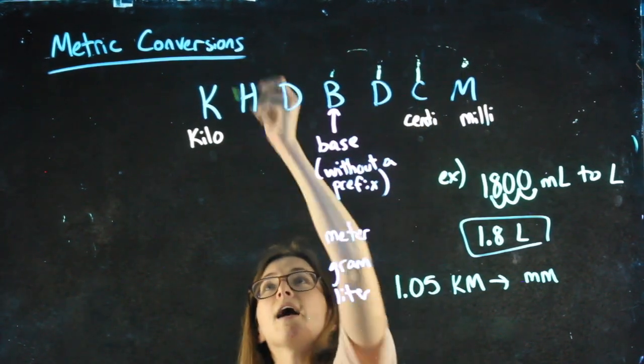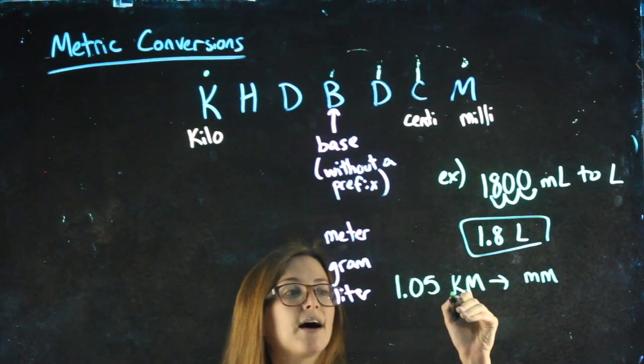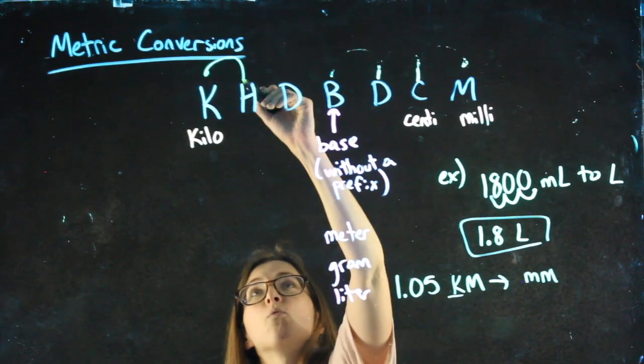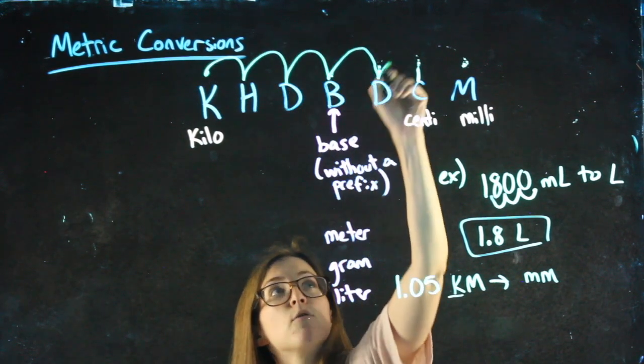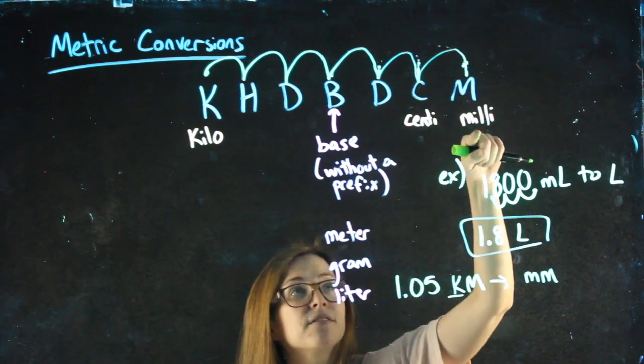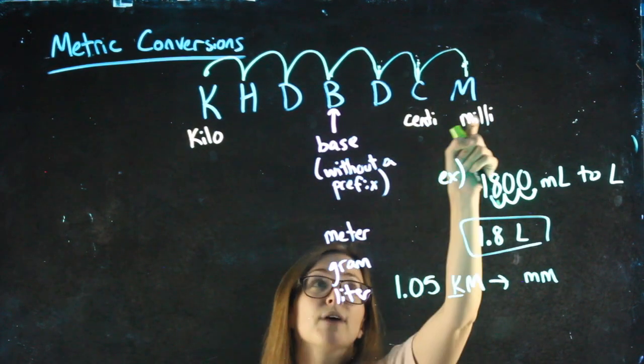I'm now starting at kilo because I have kilometers and I'm going to go one, two, three, four, five, six to the left, or sorry, to the right, six to the right to get to millimeters.